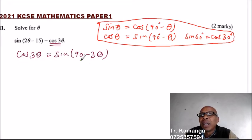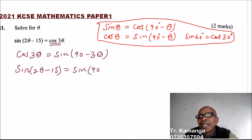Then you will be working with the sine on both sides. You can get the inverse sine of that. So you can now rewrite your expression like this: sin(2θ - 15) equals the sine of 90 minus 3θ.